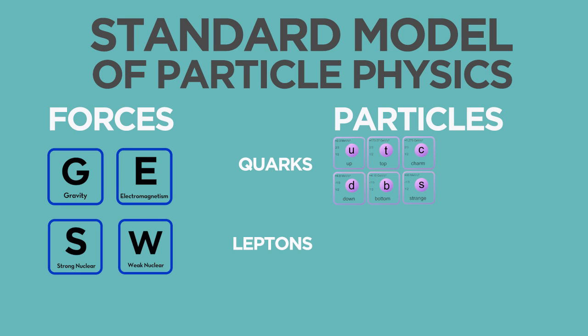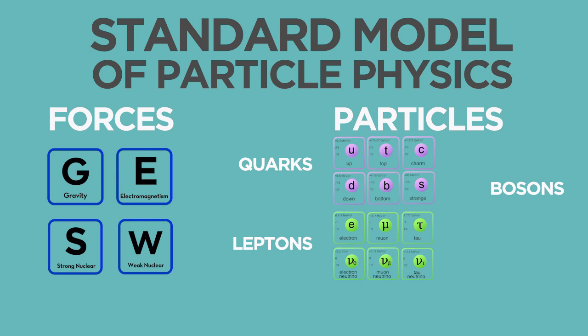Six leptons: the electron, muon, tau, and their corresponding neutrinos. And five bosons: the W and Z boson, the photon, the gluon, and the most recently discovered, Higgs boson. The Higgs boson, by the way, is the only fundamental particle named after a person. Good show, old chap.